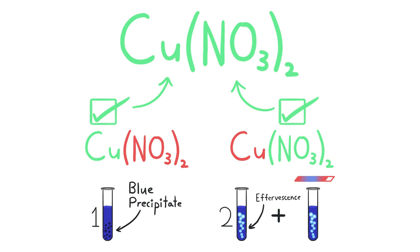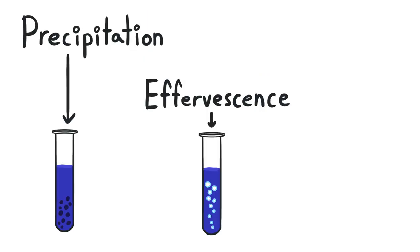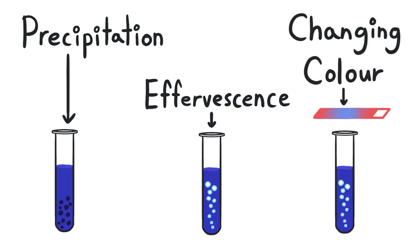From the copper nitrate example, there are three main types of observations we need to take note for the test, which are forming of precipitates, bubbles of gas also known as effervescence, and changes of color, for example, litmus papers test.